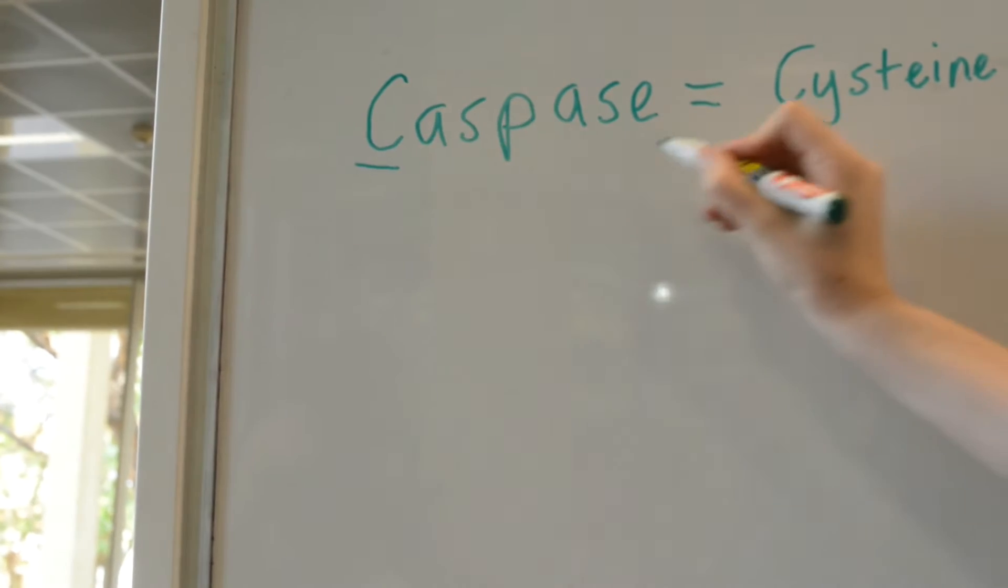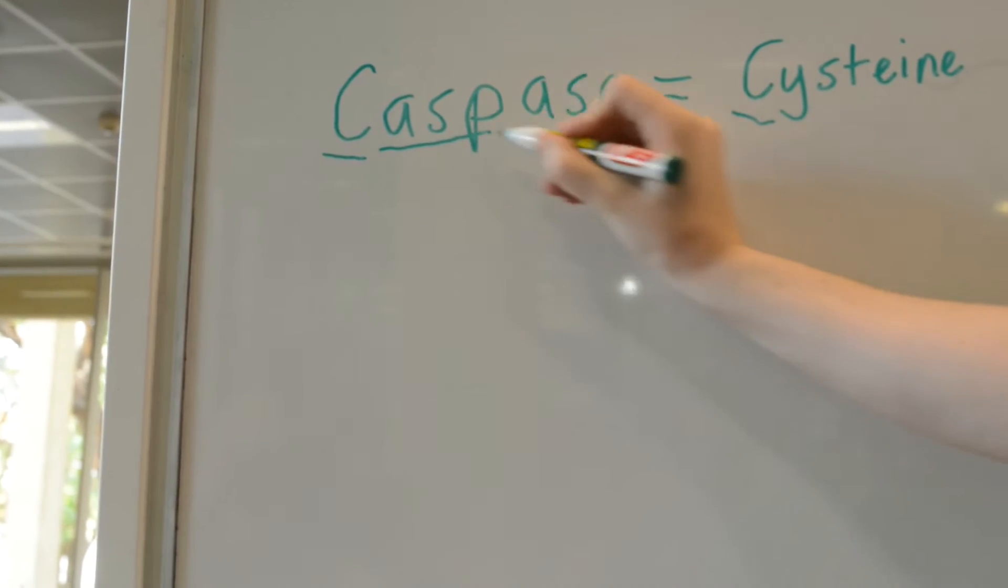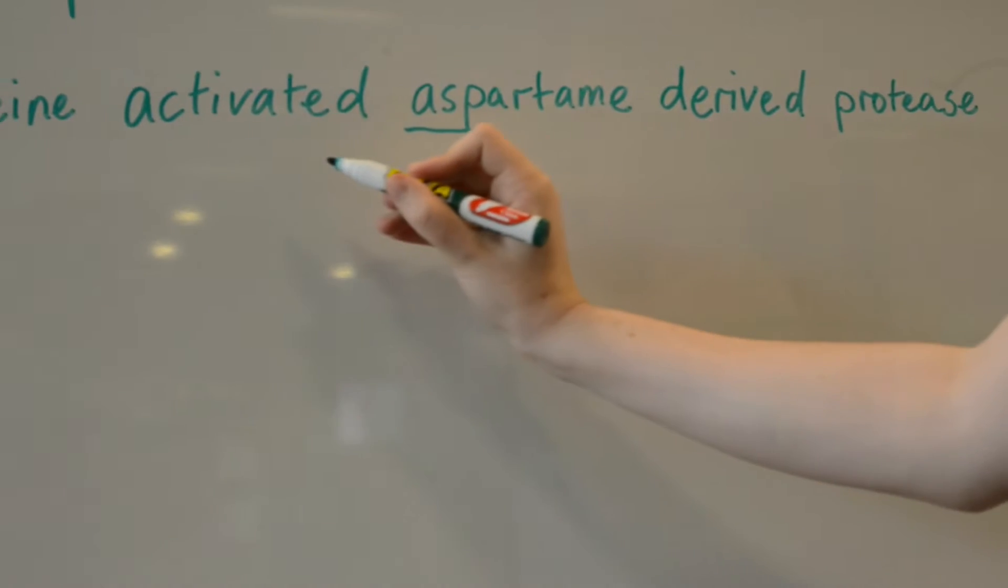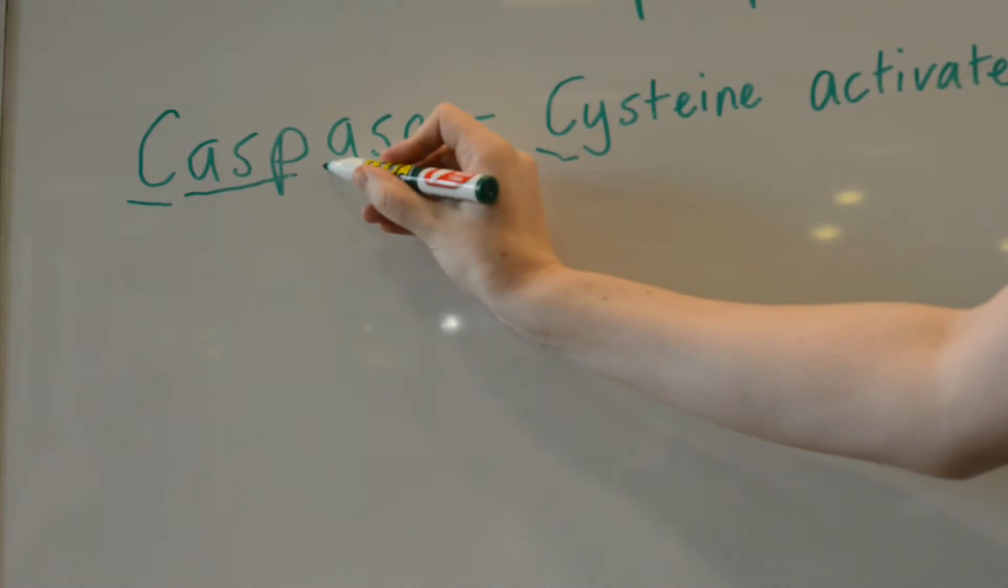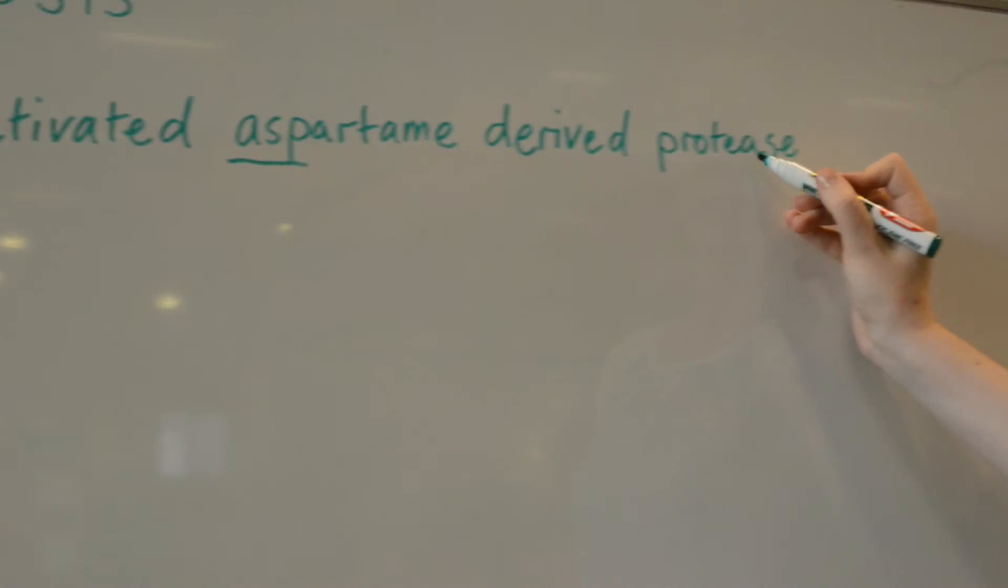One of the key components of apoptosis is the family of enzymes called caspases. There are 12 of these cysteine activated aspartate derived proteases, and they are essential throughout the apoptotic pathway.